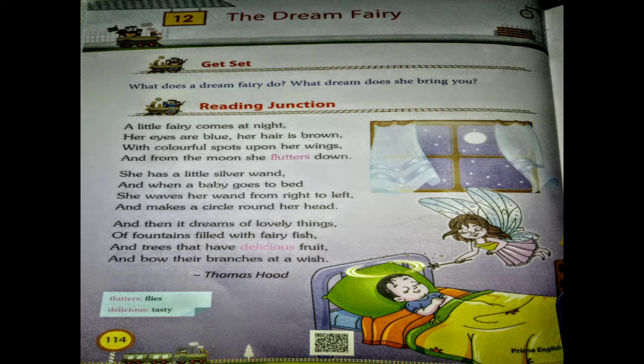With colorful spots open her wings, and from the moon she flutters down. 'Flutters' means 'flies.' She has a little silver wand, and when a baby goes to bed, she waves her wand from right to left and makes a circle round her head.